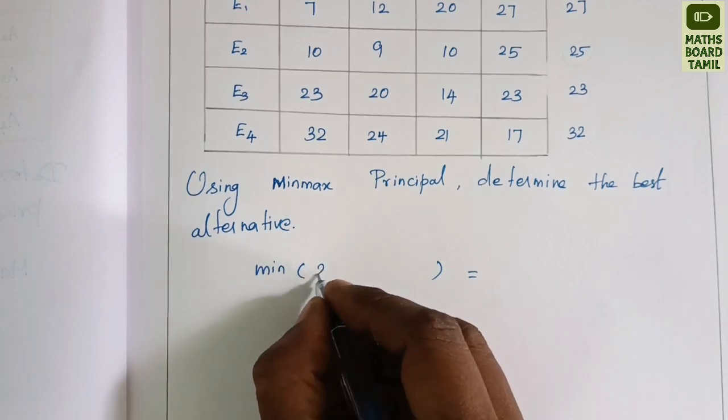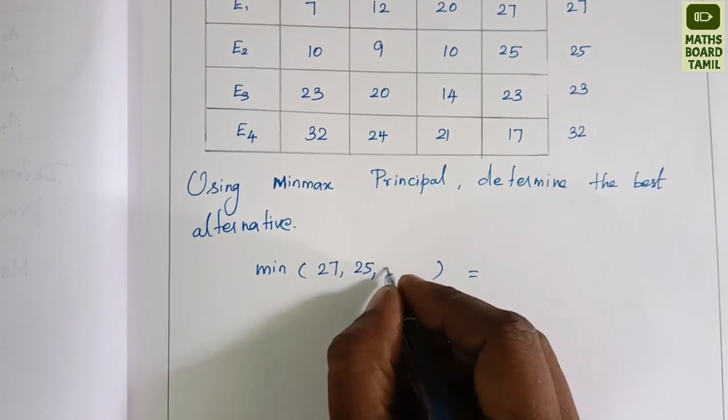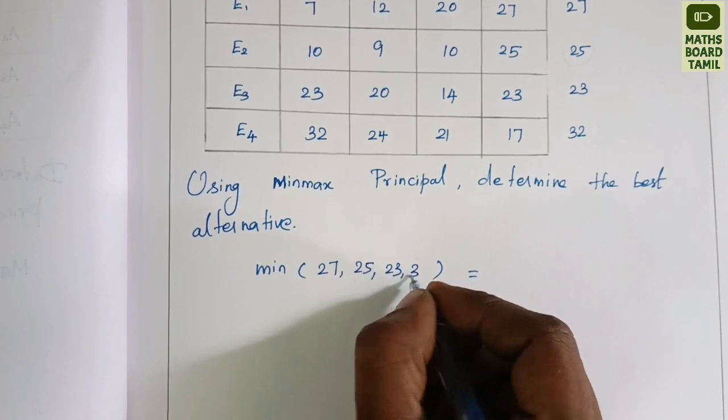First row is 27, second row is 25, third row is 23, fourth row is 32.